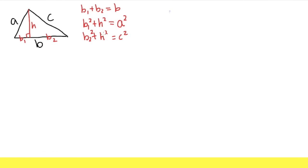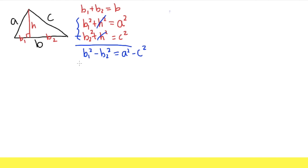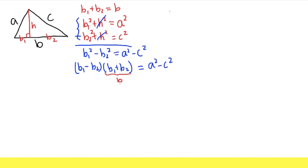Let's work with these two equations first, since they both have H². Let's subtract the equations — the H² terms cancel, giving us B1² - B2² = A² - C². This is a difference of two squares, so we can factor it as (B1 - B2)(B1 + B2) = A² - C². The factor B1 + B2 equals B, so dividing both sides by B gives us B1 - B2 = (A² - C²) / B.